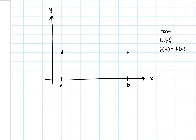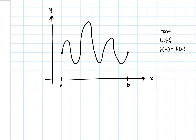Draw whatever function you want — I'm going to draw a little squiggly. Draw whatever you want as long as you start and end with f(a) equals f(b), and you have a continuous and differentiable function — so no corners or cusps, and don't lift up your pencil. Those are the three conditions of Rolle's Theorem.